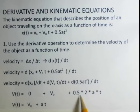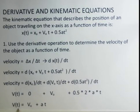And of course, we can simplify this a little bit. 0.5 times 2, that's a factor of 1. So we get the familiar equation: the velocity at the end of some time interval is equal to the initial velocity plus the acceleration multiplied by the time.